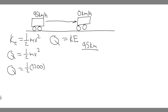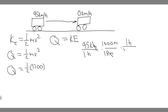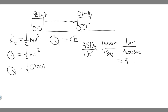So 95 kilometers per hour — we have the hour on the bottom. Let's start by getting rid of the kilometers: for every one kilometer there are a thousand meters, so the kilometers will cancel. Then we need to get rid of the hour: for every one hour there are 3600 seconds, so that cancels too. We're left with meters per second, which is exactly what we want. So we're going to do 95,000 divided by 3600, and keep in mind this is meters per second.